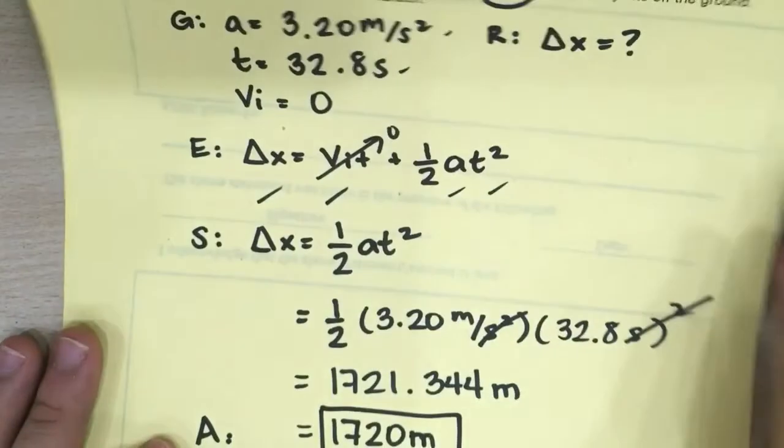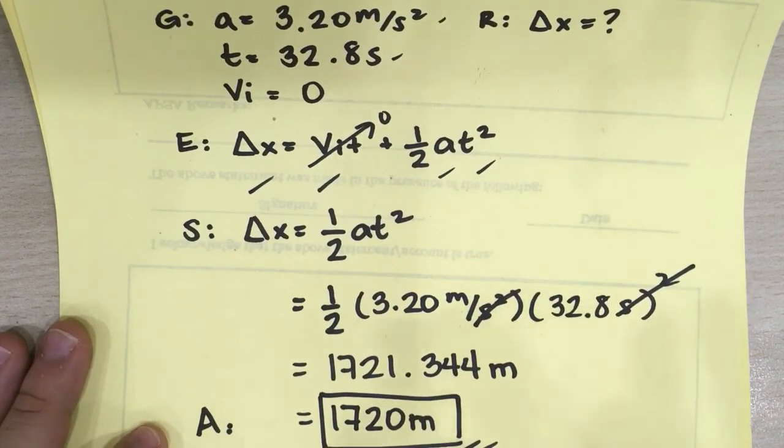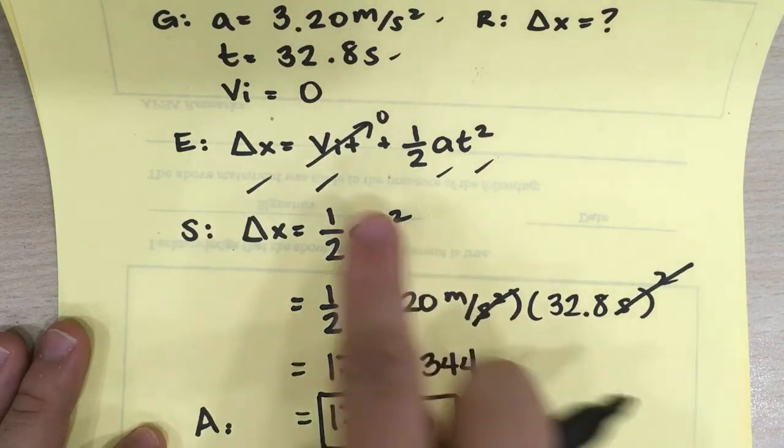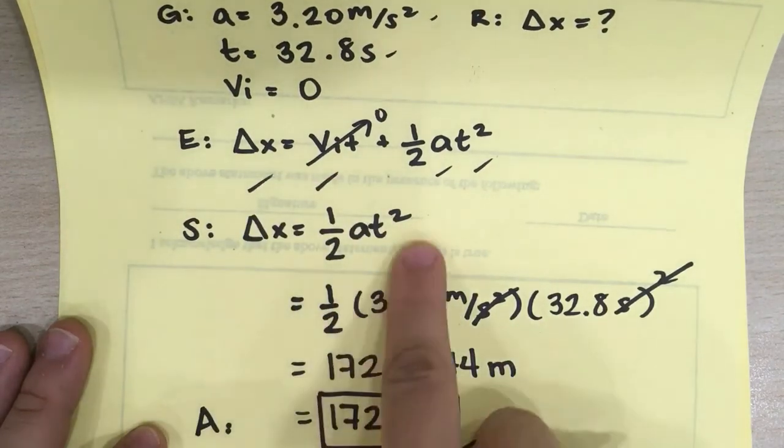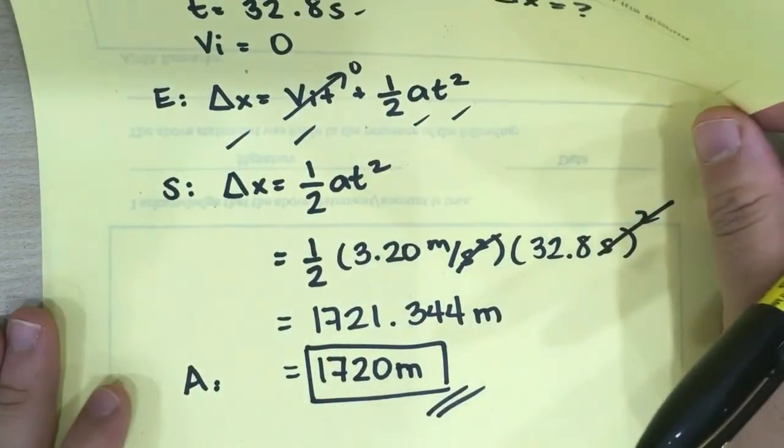Okay? So as long as you're organized with your problem solving, as you can see, we should be able to be fine with the horizontal motion problems because it's just a matter of choosing an equation, plugging it in, then solving, and then checking for sig figs. Okay?